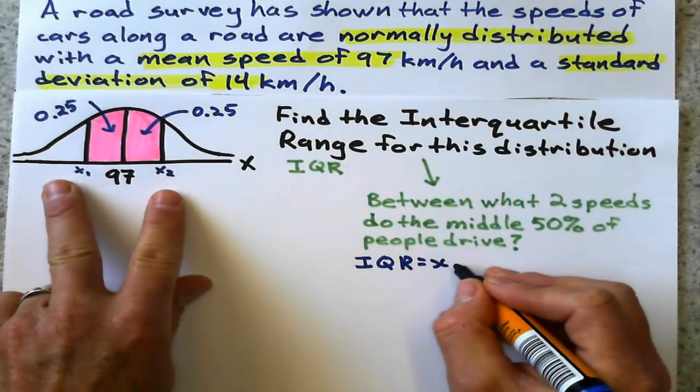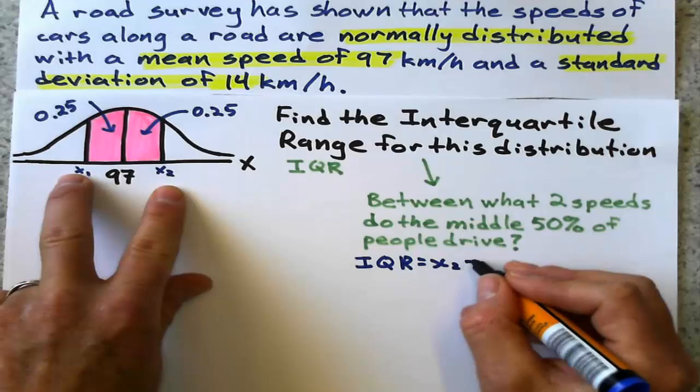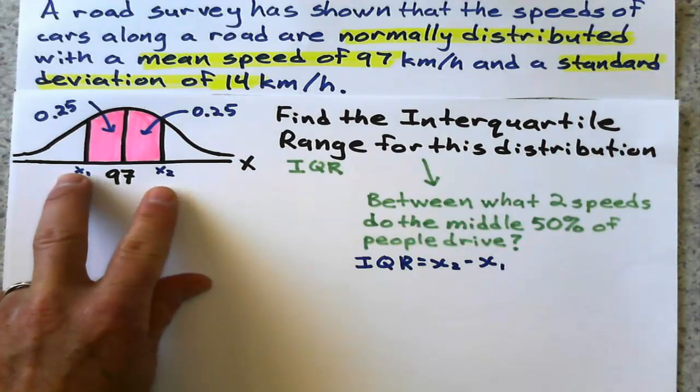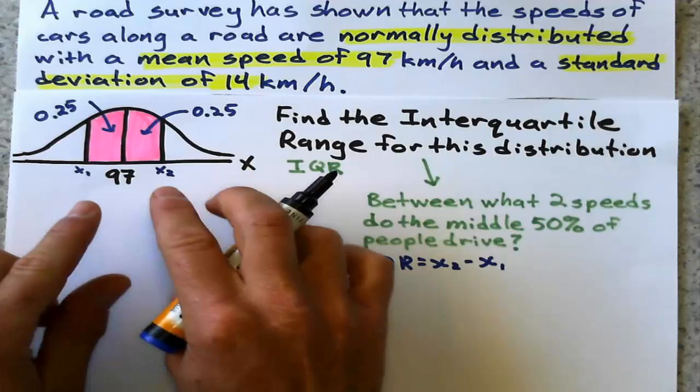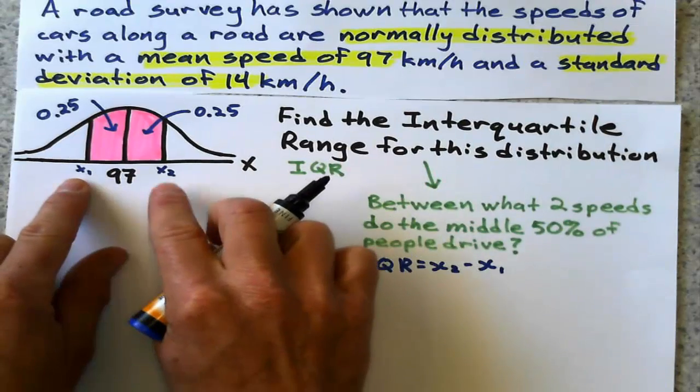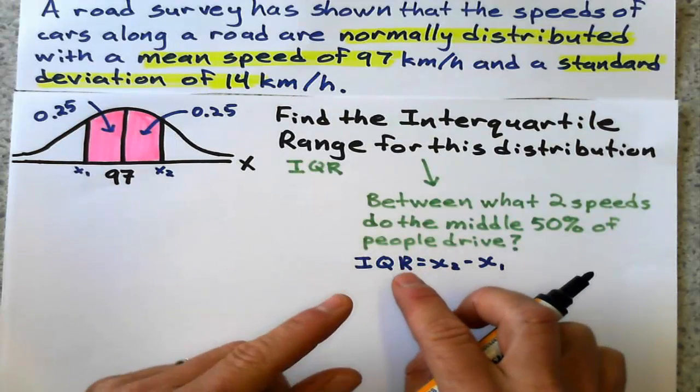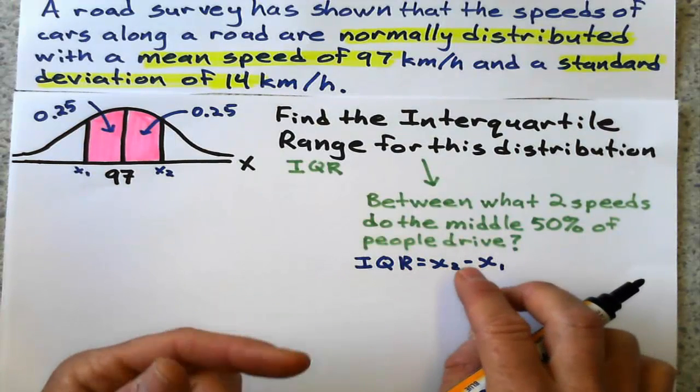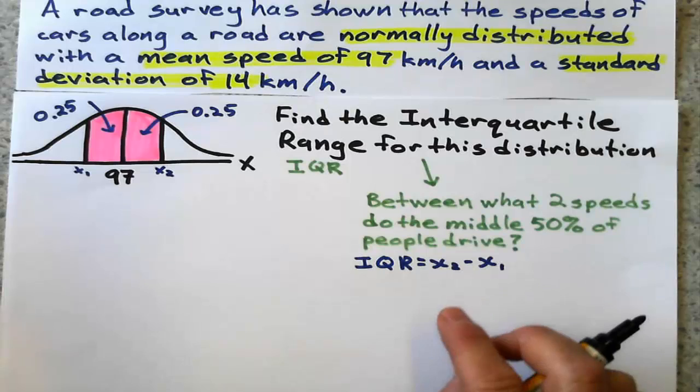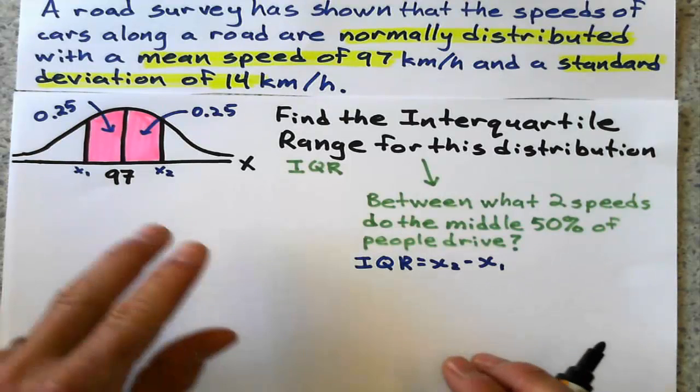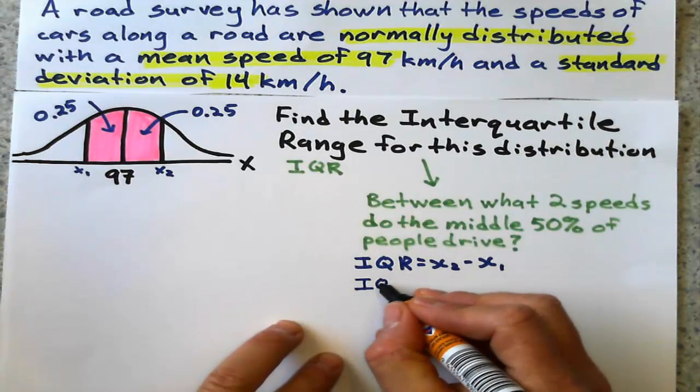When you state the answer, you could just say it's this speed and this speed, but if we want to be technical about it, a range usually is the difference between two values, meaning takeaway.